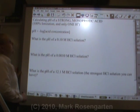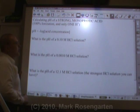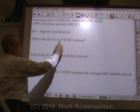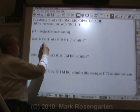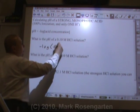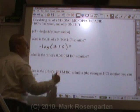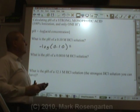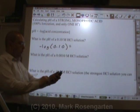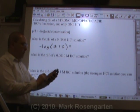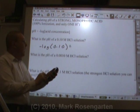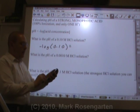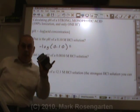Since pH is the negative log of the H+ concentration, the concentration of a strong acid is the same as the concentration of H+. So it's the negative log of 0.10. What is the negative log of 0.10? I put 0.1 and then hit the button that says log. Actually, on this calculator you have to hit log first, then put 0.10, and hit equals — and I come out with negative 1.